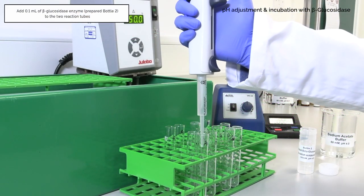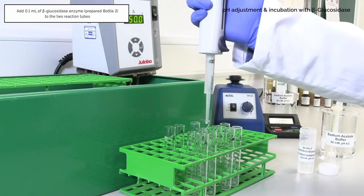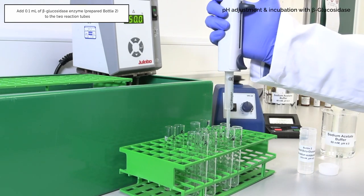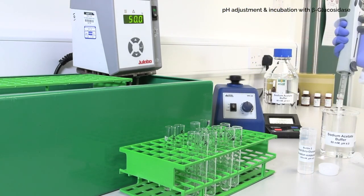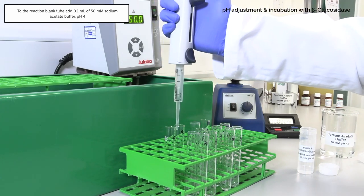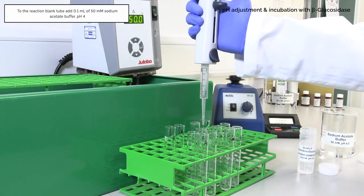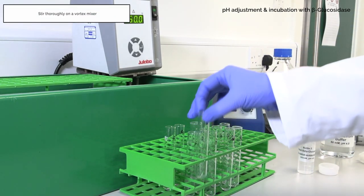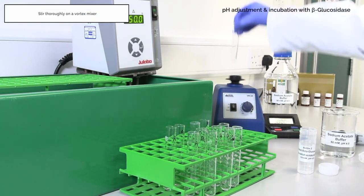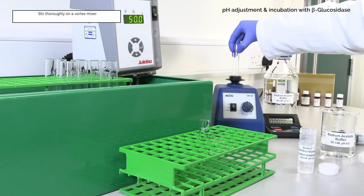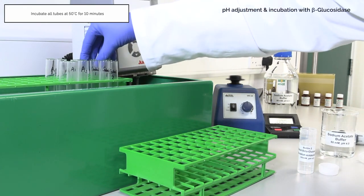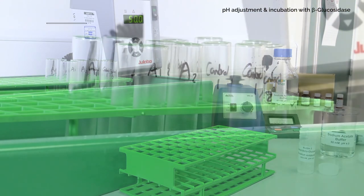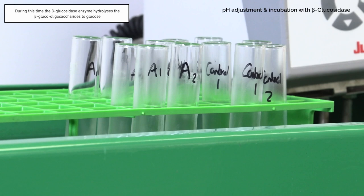Add 0.1 milliliters of beta-glucosidase enzyme, prepared bottle 2, to the two reaction tubes. To the reaction blank tube, add 0.1 milliliters of 50 millimolar sodium acetate buffer pH 4. Stir thoroughly on a vortex mixer. Incubate all tubes at 50 degrees Celsius for 10 minutes. During this time, the beta-glucosidase enzyme hydrolyzes the beta-glucosaccharides to glucose.